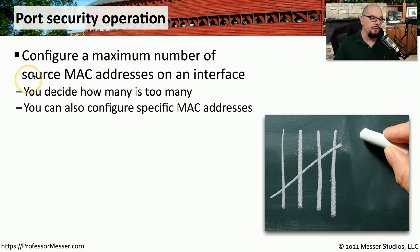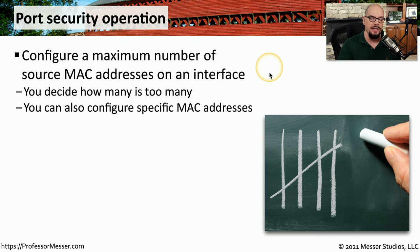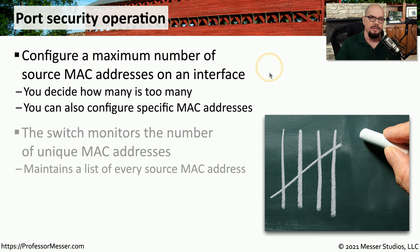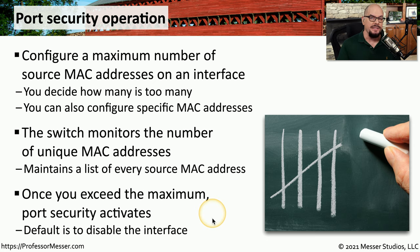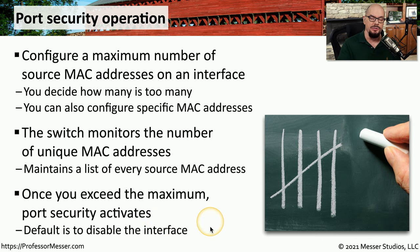For example, you would set a configuration on your switch that configures a maximum number of source MAC addresses on a particular interface. Normally, when a person is working on the network, they would be connected using that MAC address. But if someone else came along and disconnected that user and plugged in their own device, a new MAC address would be introduced to that interface. The switch monitors how many different MAC addresses have been seen on a particular physical interface, and if that number is exceeded, you can choose to disable that interface or send an alert to the administrator.